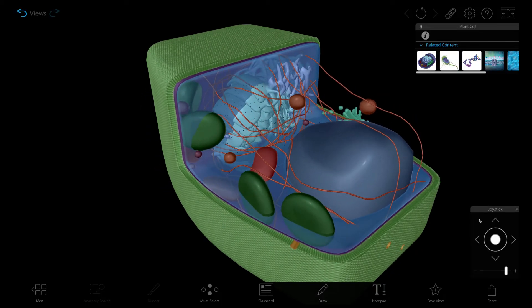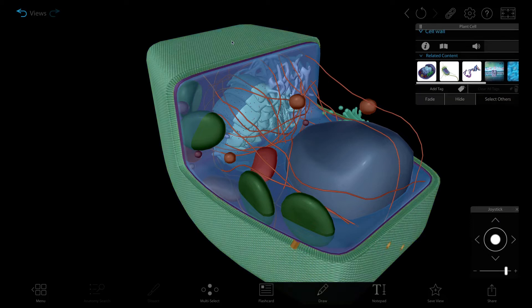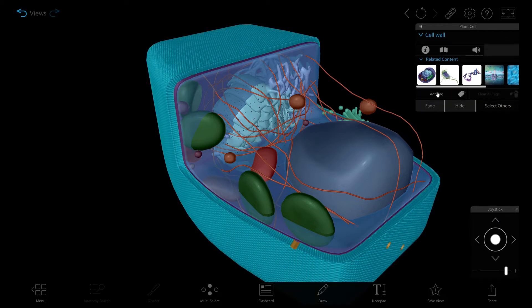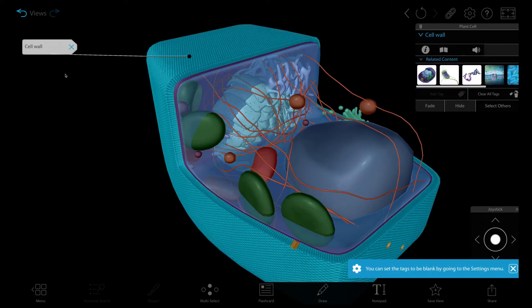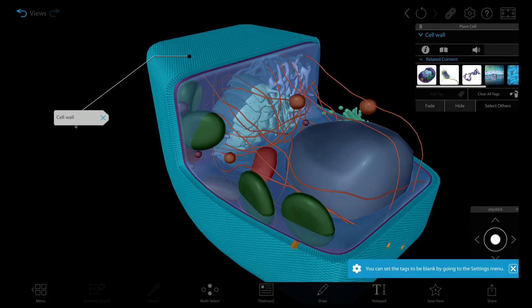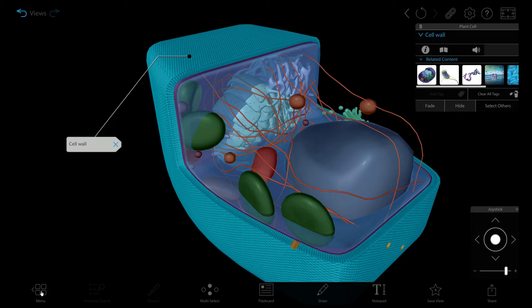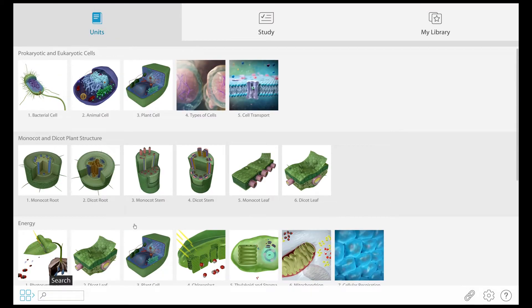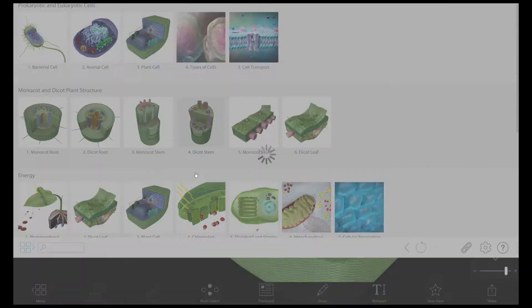Remember how our bacterial cells sometimes had an additional cell wall for environmental protection? Plant cells have one as well. Plant cells developed a cell wall because, unlike animal cells, they can't move from place to place and they needed to be able to withstand a wide variety of weather conditions. The plant cell wall is made of cellulose, which is basically a long chain of glucose molecules. It surrounds the plasma membrane and protects the inside of the cell.